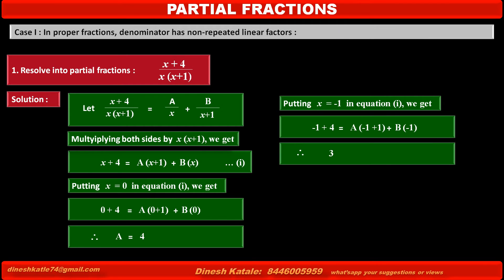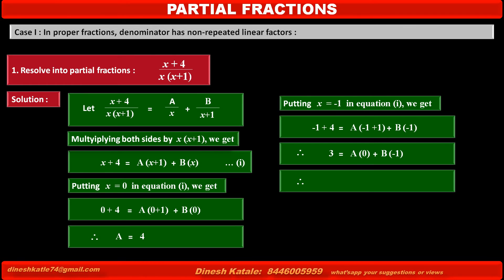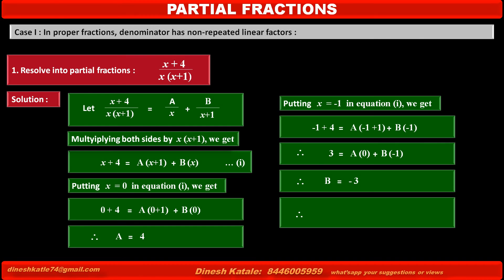Solving, the left-hand side gives 3. On the right-hand side, the first term becomes A(0), so it vanishes, and we get 3 = B(−1), giving B = −3. Therefore, the partial fraction is: (x + 4) / [x(x + 1)] = 4/x − 3/(x + 1).